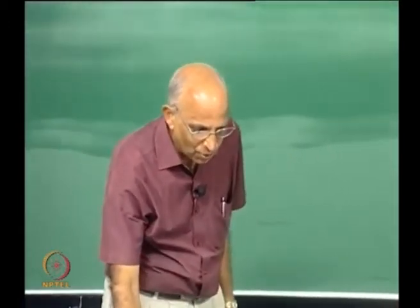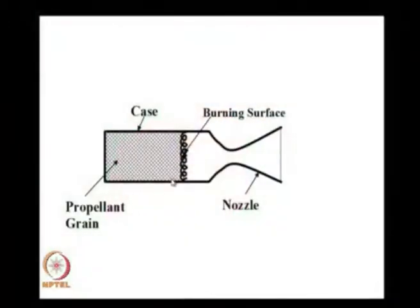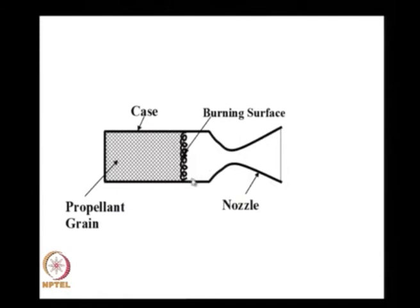What we did in the last class: we have the propellant grain inside a particular case, this is the nozzle. We ignite the surface of the propellant, and the surface regresses at a particular rate which we call the burn rate.